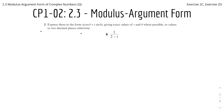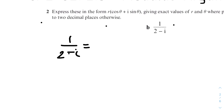Express this function in the form r(cosθ + i sinθ), or the modulus-argument form, giving exact values for r and θ where possible, or values to two decimal places otherwise. We have 1 over (2 − i). We first have to simplify it so that it becomes just one bracket — similar to rationalizing the denominator — where we multiply the top and bottom by the complex conjugate of the denominator.